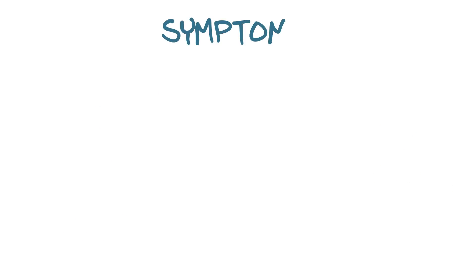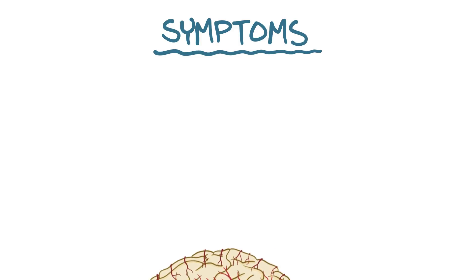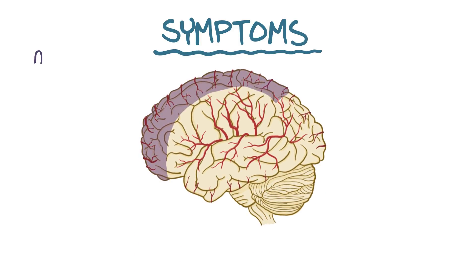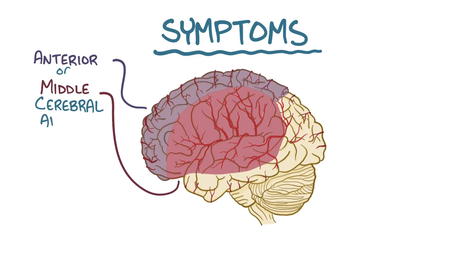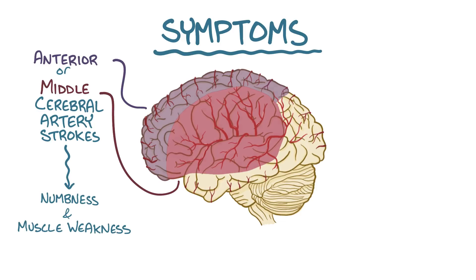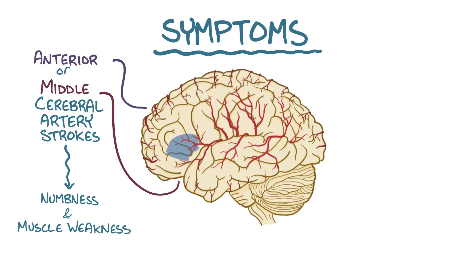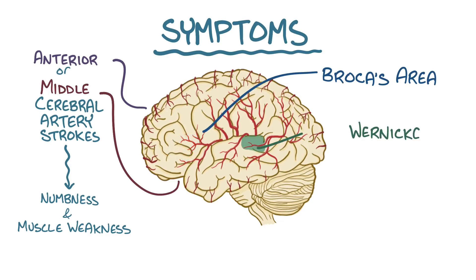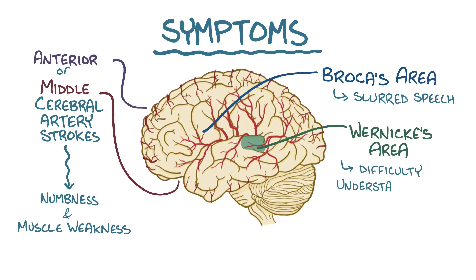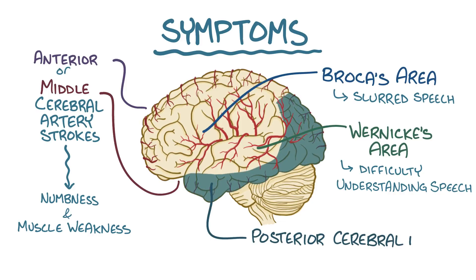Stroke symptoms depend on the exact part of the brain that is affected. For example, an anterior or middle cerebral artery stroke can cause numbness and sudden muscle weakness. If a stroke affects Broca's area, which is usually in the left frontal lobe, or Wernicke's area, which is usually in the left temporal lobe, then it can cause slurred speech or difficulties understanding speech, respectively. If there is a posterior cerebral artery stroke, then it can affect vision.